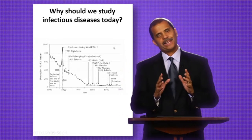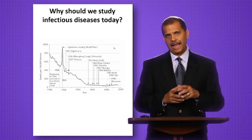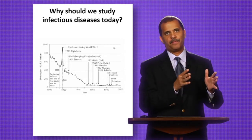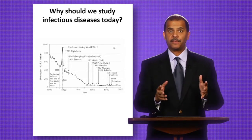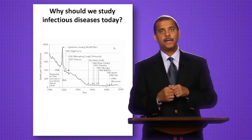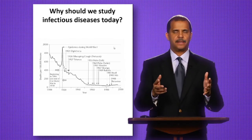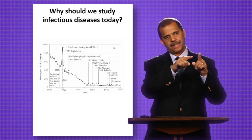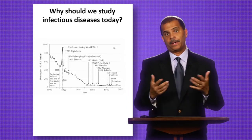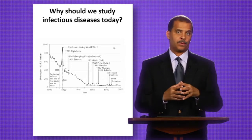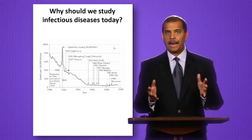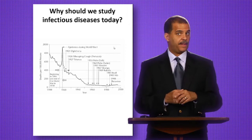But why should you really care about infectious diseases? At the beginning of time, most of us died from infectious diseases — could have been rubella, could have been all types of diseases. But what they have done over time is decreased. So most of us now are dying from chronic lifestyle-related diseases: diabetes, hypertension, cancer — not so much from infectious diseases.